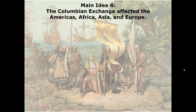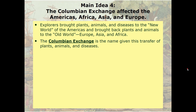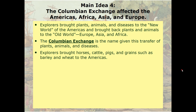Main idea four: the Columbian exchange affected the Americas, Africa, Asia, and Europe. Explorers brought plants, animals, and diseases to the new world of the Americas, and brought back plants and animals to the old world — Europe, Asia, and Africa. The Columbian exchange, sometimes called the great exchange, is the name given to this transfer of plants, animals, and diseases. Explorers brought horses, cattle, pigs, and grains such as barley and wheat to the Americas.